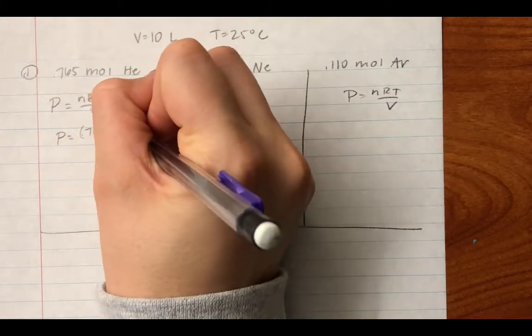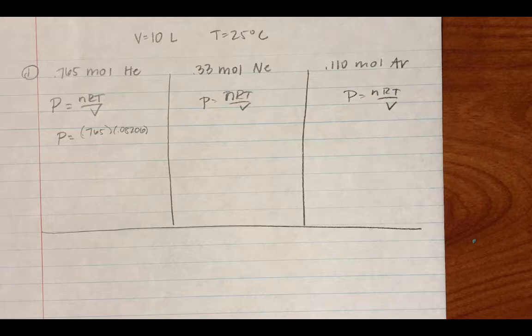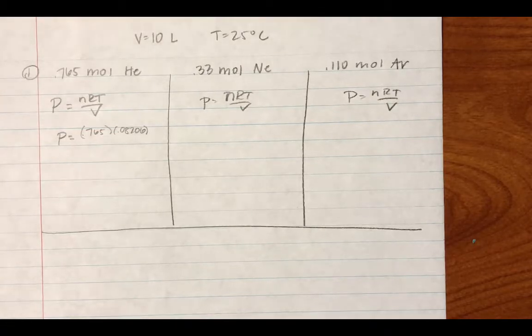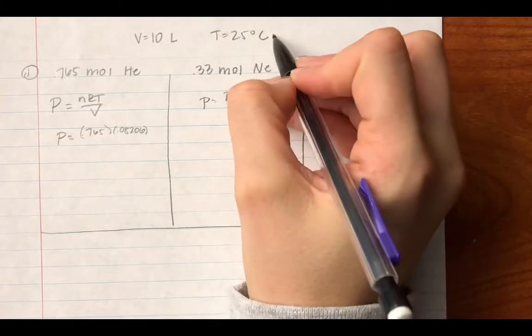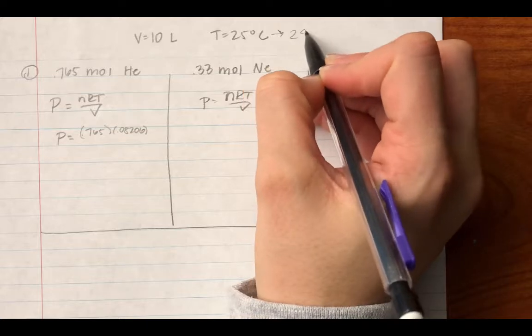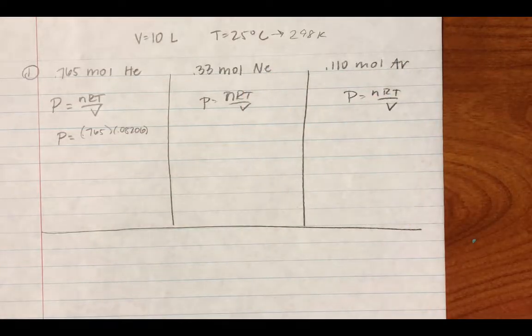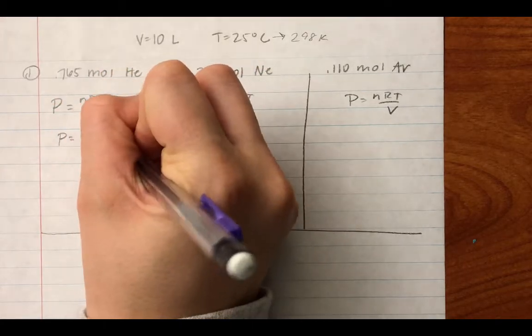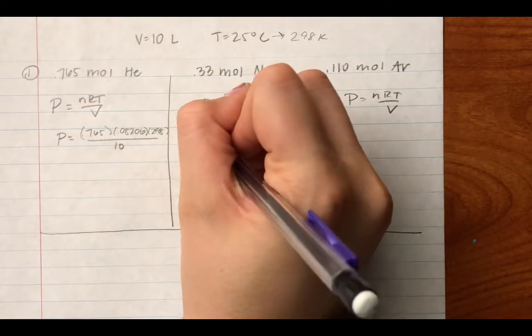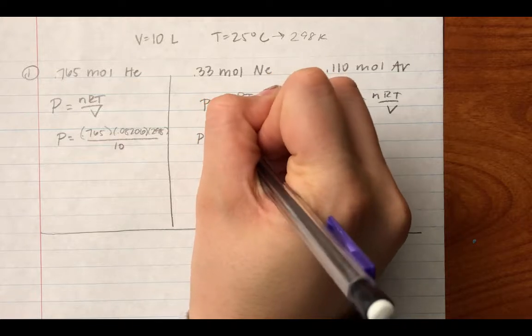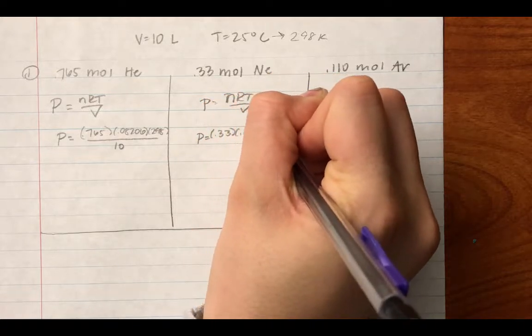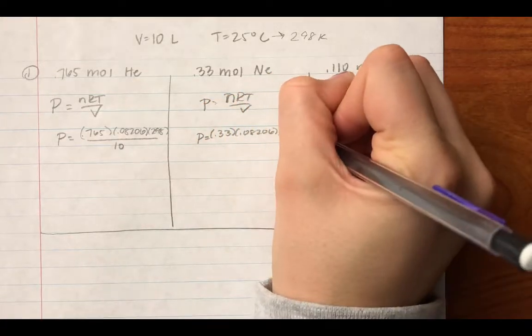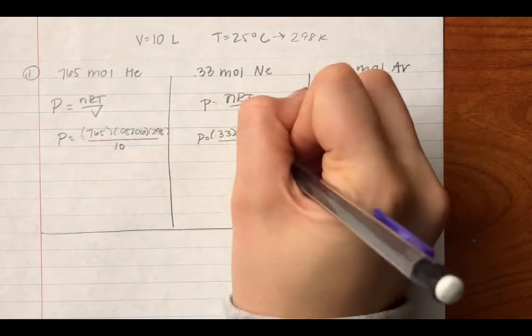So my number of moles, they gave me 0.765. I'm going to use 0.08206 if I'm not given pressure, and then I'm just going to solve in ATM. My temperature, remember, you can't use Celsius. You must use Kelvin, so 298 Kelvin. All divided by 10 liters. And I'm going to do that for each one of these gases so that way I can find the partial pressure of each one of them.